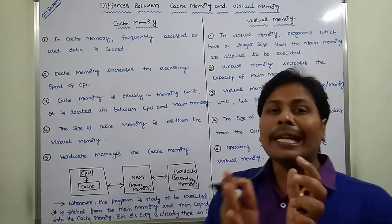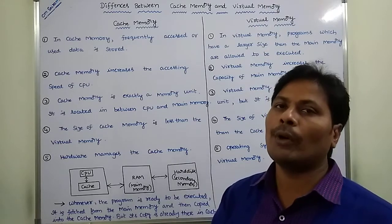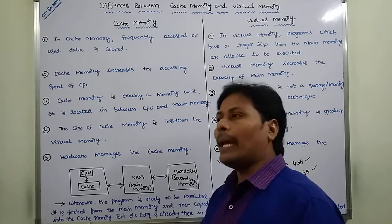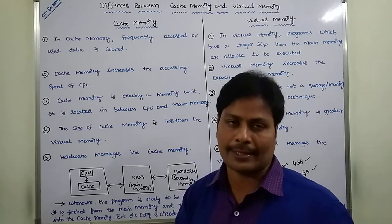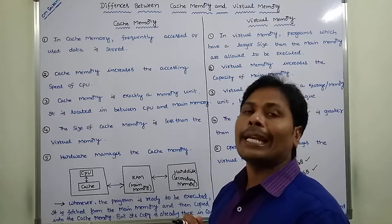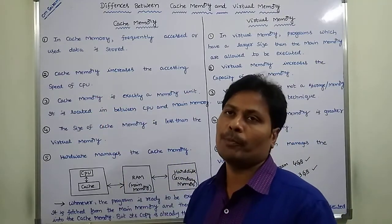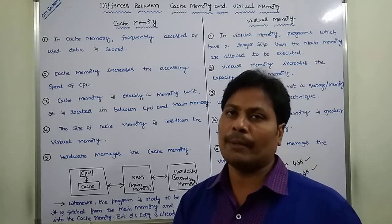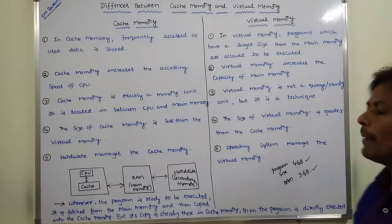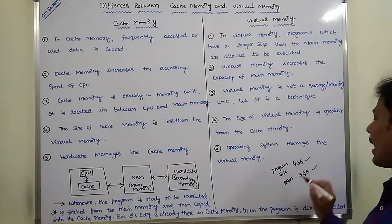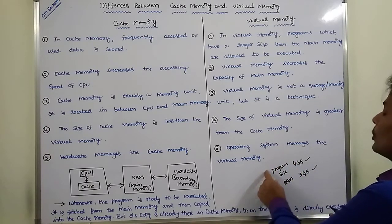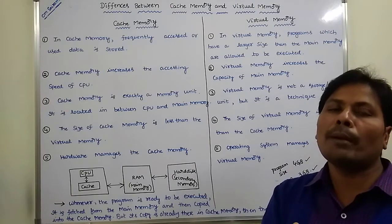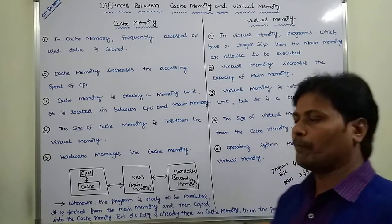The second point: cache memory increases the accessing speed of the CPU. Cache memory is used for fast accessing, so it increases the accessing speed of the CPU. Whereas in the case of virtual memory, virtual memory increases the capacity of the main memory. Here, main memory capacity is 3 GB but the program to be executed has a size of 4 GB, so those programs are allowed to be executed using virtual memory. Hence, virtual memory increases the capacity of the main memory.